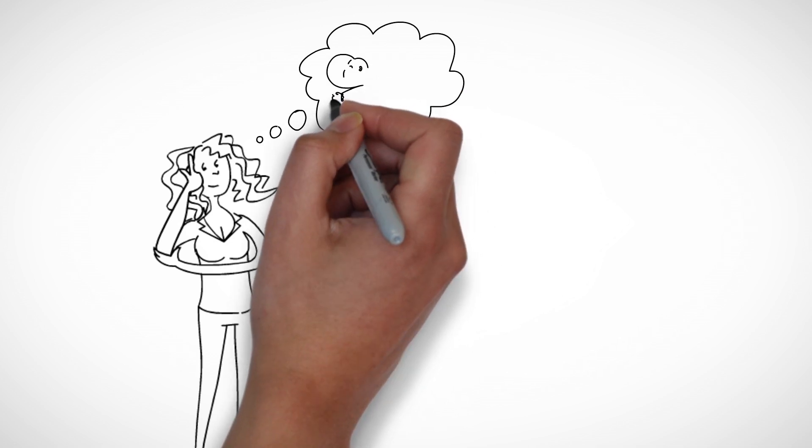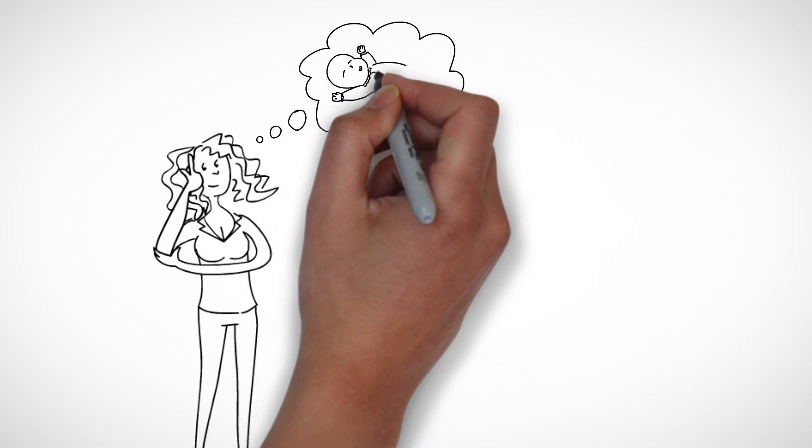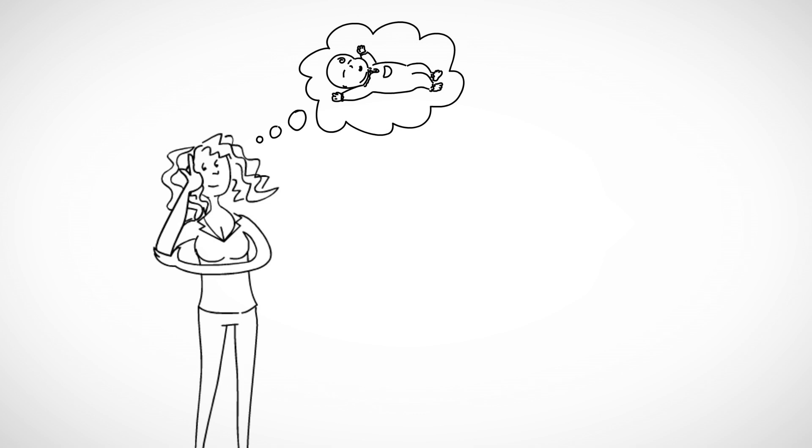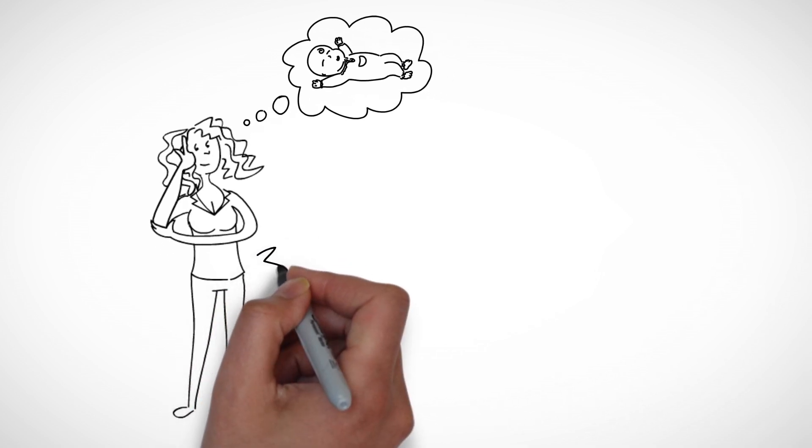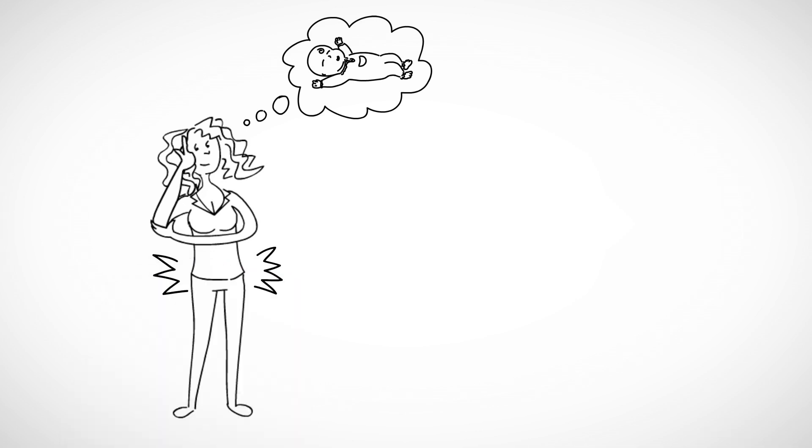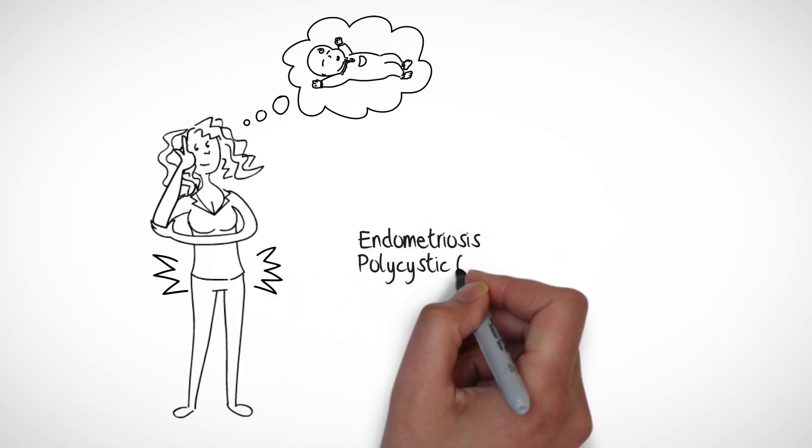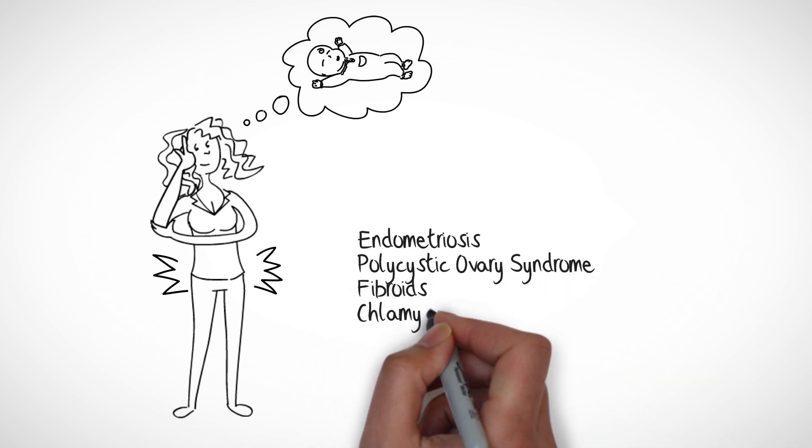Did you know that when trying to fall pregnant, a 30-year-old woman has about a 20% chance of conceiving each month? This can be complicated by possible health issues such as endometriosis, polycystic ovary syndrome, fibroids, and chlamydia.